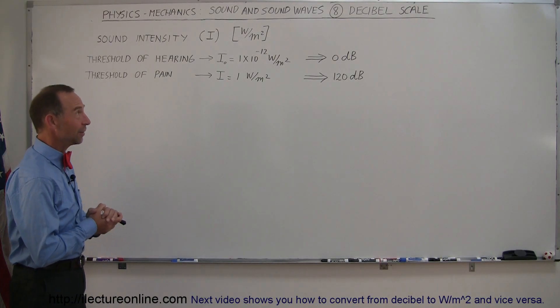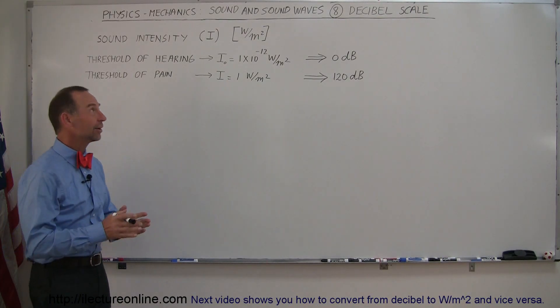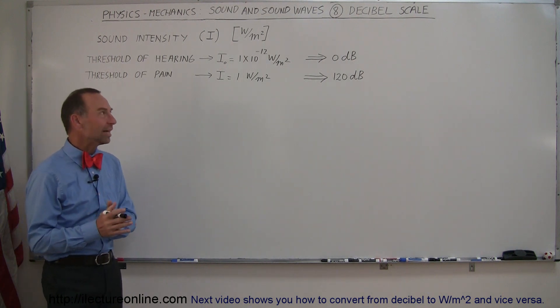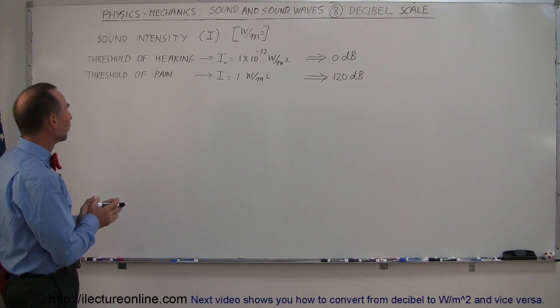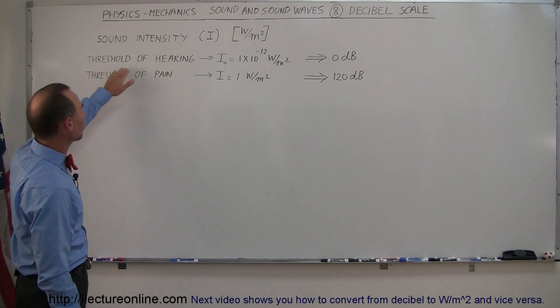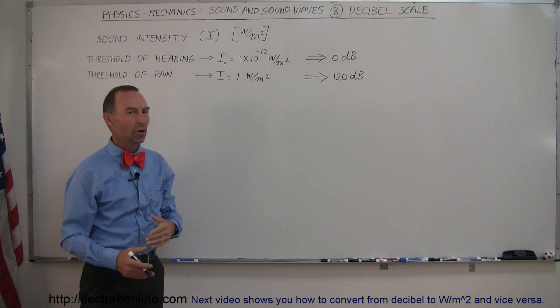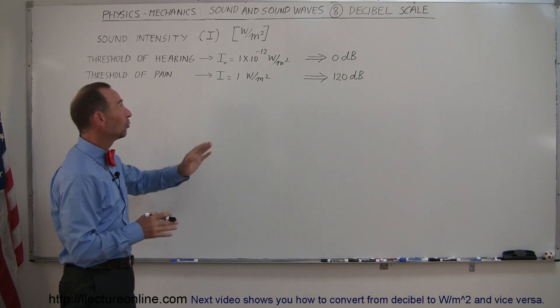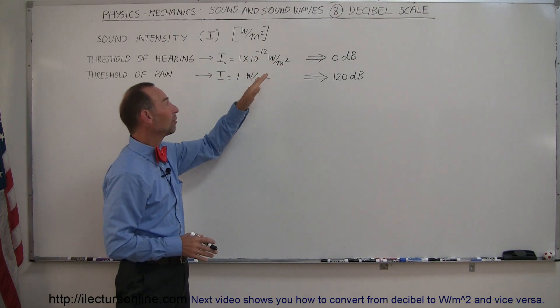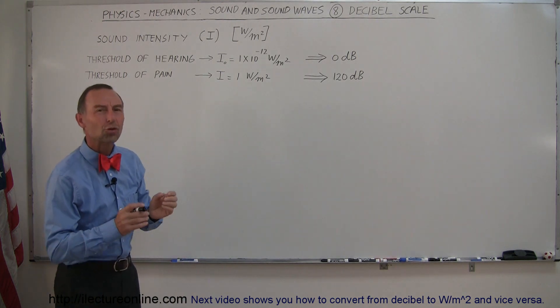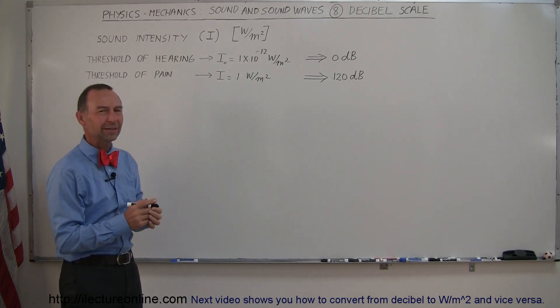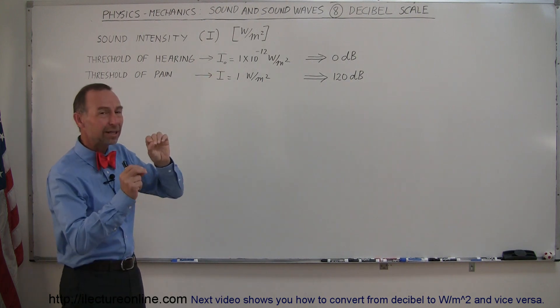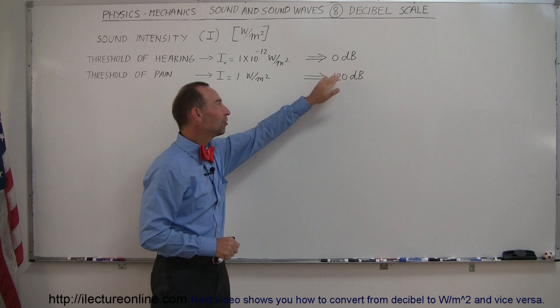And here we're going to talk a little bit more about sound and the next topic here is what we call the decibel scale. Sound intensity has a very wide range. For example, the threshold of hearing, which we call the faintest sound that the human ear can hear at about a thousand Hertz, is 1 times 10 to the minus 12 watts per square meter. That's a trillionth of a watt per square meter, almost no energy at all, yet the human ear can pick it up for those with healthy hearing.